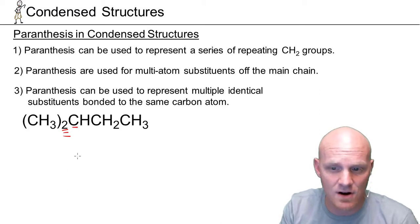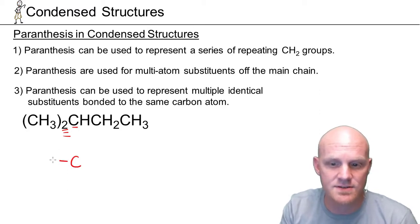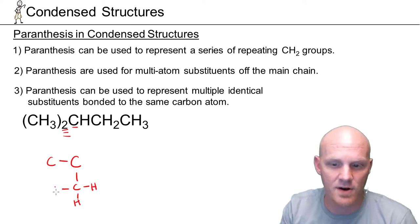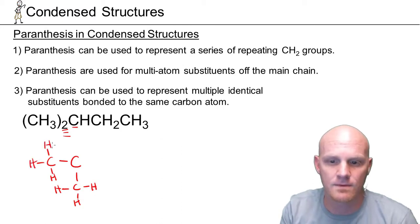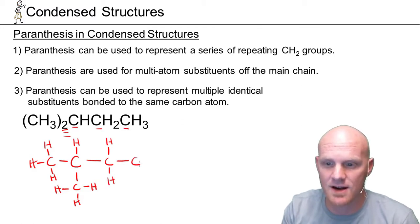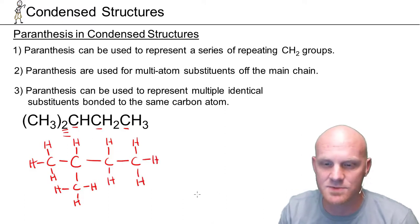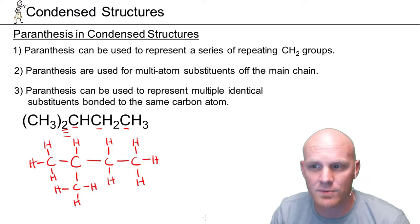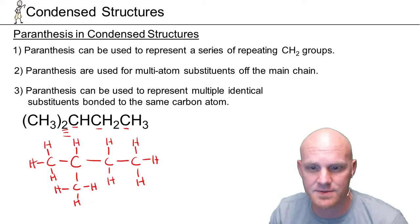So this carbon right here is bonded to two CH3s — I'll draw one there, one there, and each of those carbons has three hydrogens. Then it's bonded to a single H and then to the next carbon in the chain. That carbon is bonded to two hydrogens, which is then bonded to the next carbon, bonded to three hydrogens. This is your last use of parentheses — a special case of rule number two. Parentheses are used for multi-atom substituents, and you can also use them to show multiple identical multi-atom substituents.